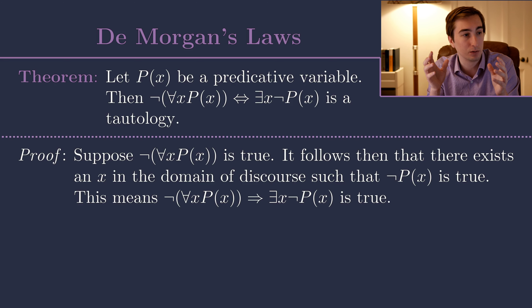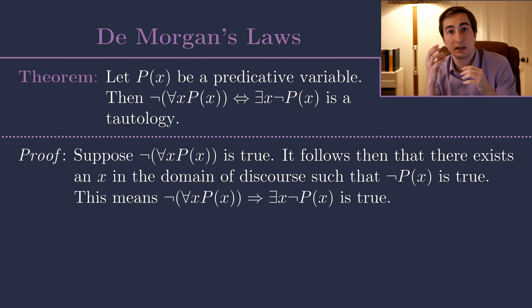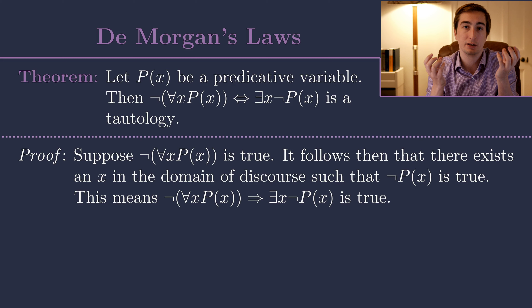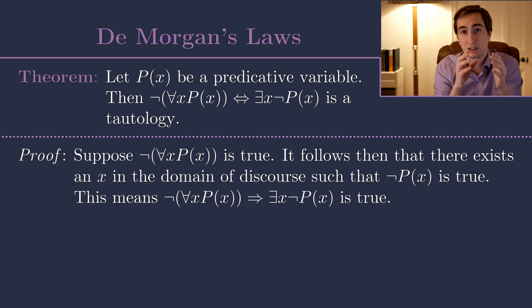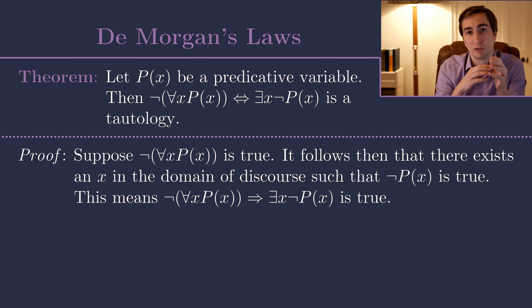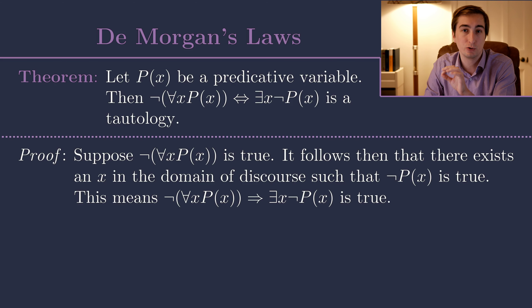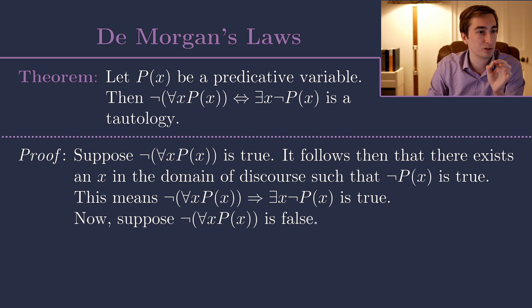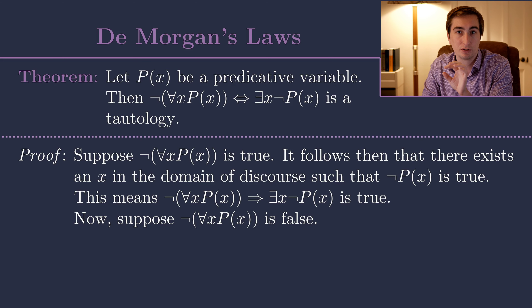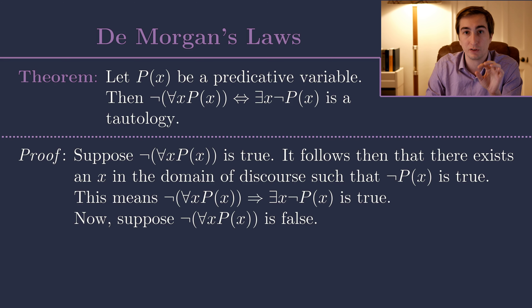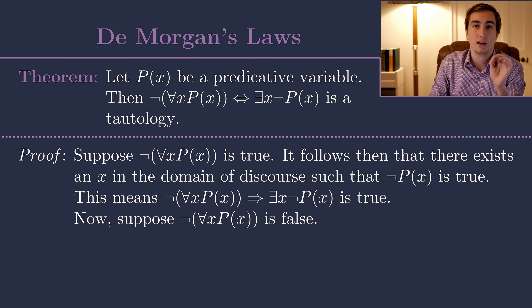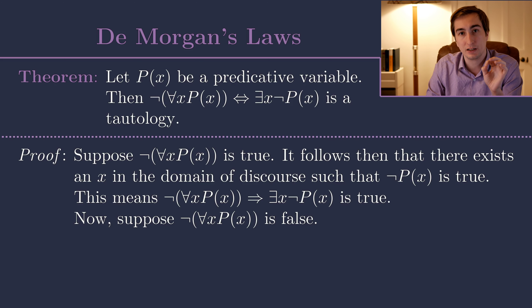The next piece is to take the right-hand side to be true and prove that the left-hand side is necessarily true. That's actually a little difficult to prove directly, so instead we'll exploit the equivalence between implications and contrapositives that we proved in a previous video. So instead of assuming the right-hand side is true, let's assume the left-hand side is false. If 'not for all x, P(x)' is false, and we can show the right-hand side is false as a result, then we will have proven the converse. So if 'not for all x, P(x)' is false, that means for every x, P(x) is true.